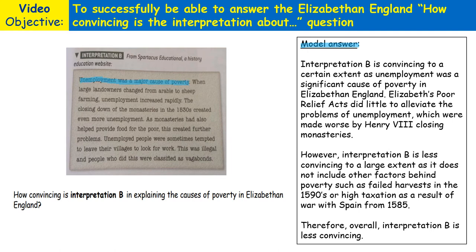Unemployment was a major cause of poverty in Elizabethan England. It references the closing down of monasteries in the 1530s and also says that people left their villages as a result of increased unemployment. However, this was illegal under Elizabethan laws created at the time and people were classified as vagabonds, who could be severely punished. Let's have a look at the model answer to this question.